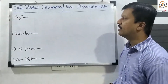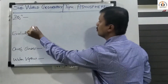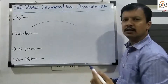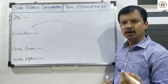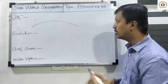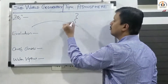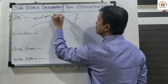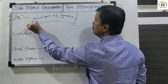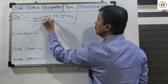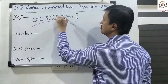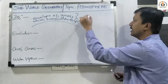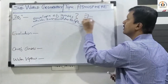Let us start with the definition of atmosphere. What do we mean by atmosphere? We have seen many interior layers of the earth like the lithosphere, mesosphere, and barysphere. Basically, atmosphere is nothing but the envelope of gases which surrounds the earth's surface.